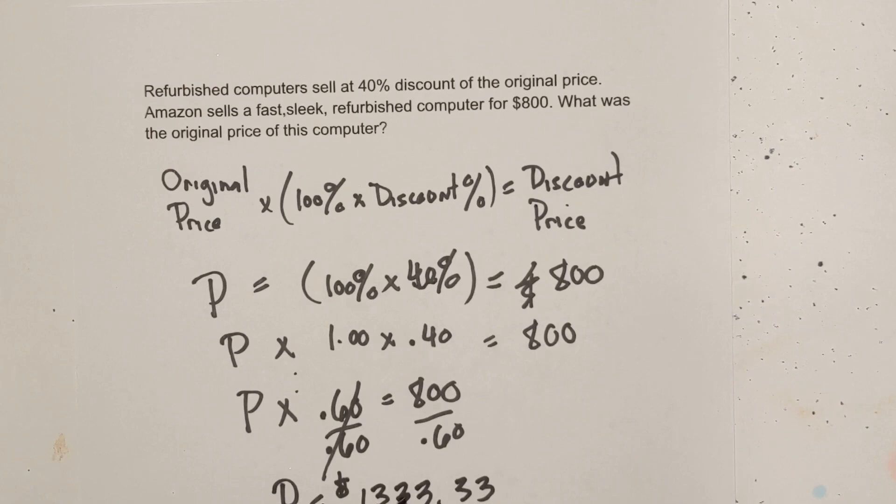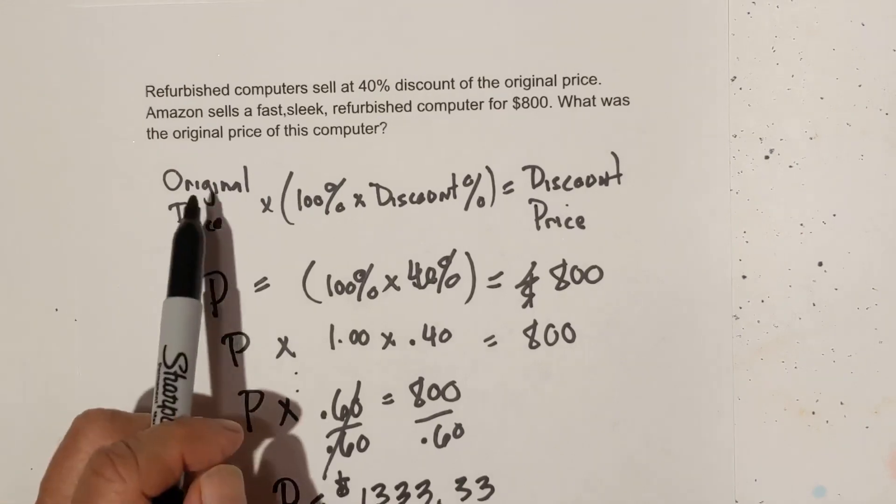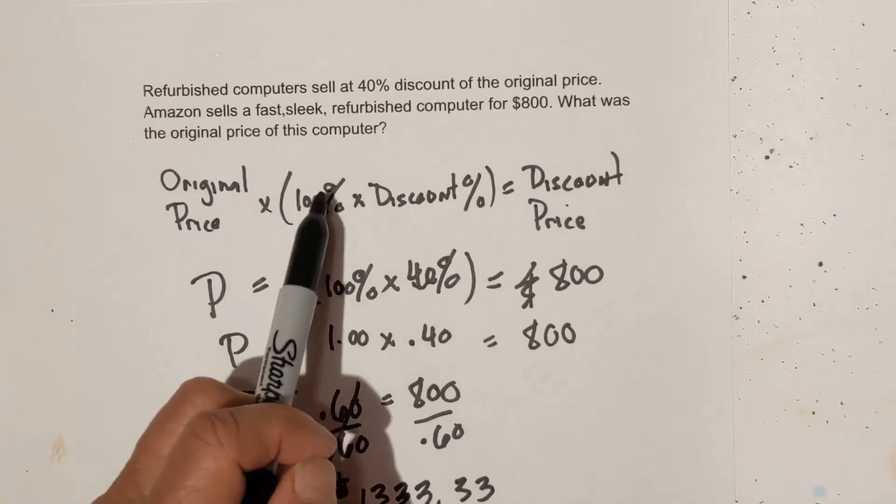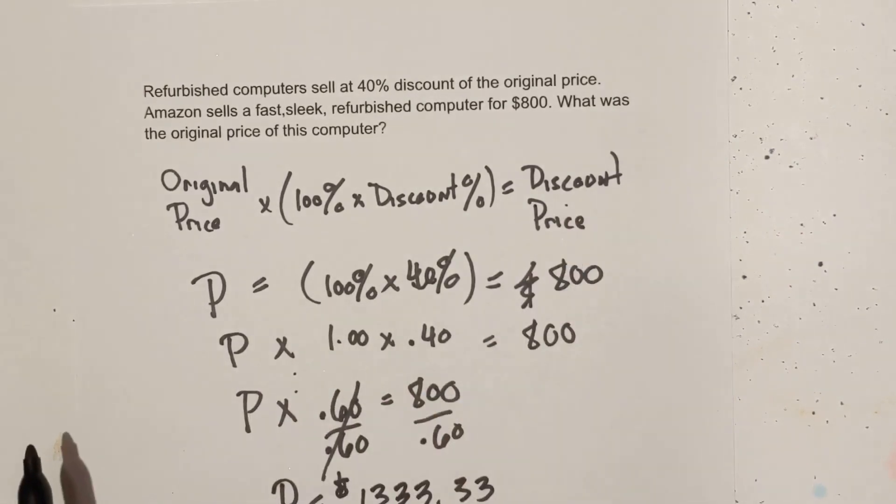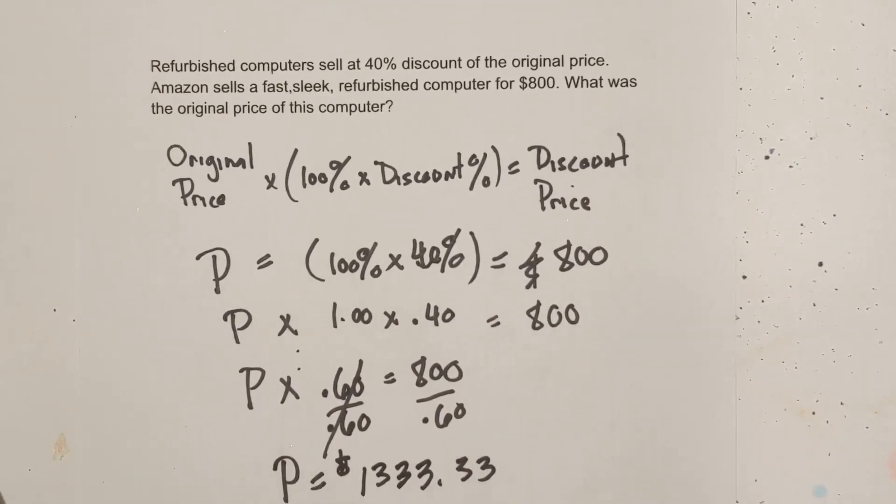So I hope that helps. Again, in summary, use this formula, original price times 100% times discount percent equals discount price. Fill in what we have and go from there. Thanks for watching and remember, kindness multiplies. Kindness be kind to someone today.